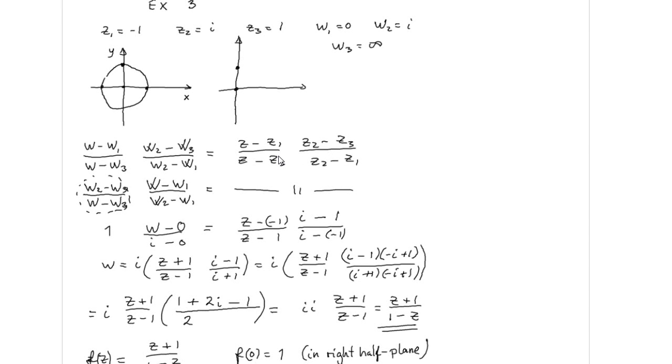In the previous example, some of the points were at infinity. In this example, we are going to consider a case where one of the mapped points are at infinity, like this.